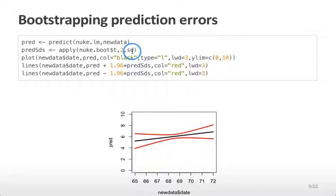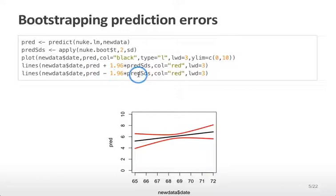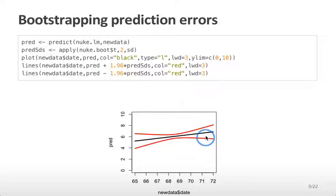We can plot, in addition to the fitted values, the prediction plus 1.96 times the standard errors for each column, and similarly the predicted values minus 1.96 times the predicted standard deviations. What you see in red are the prediction intervals for our predicted values. Near the center of the distribution where there are many data points, we get very accurate predictions, but near the ends where we have fewer data points, we get much less accurate predictions. That's how the bootstrap can be used to calculate prediction errors.